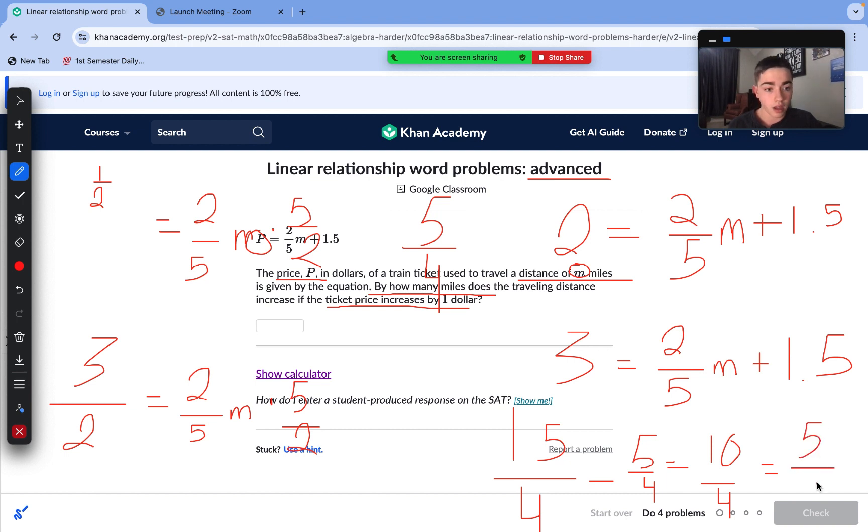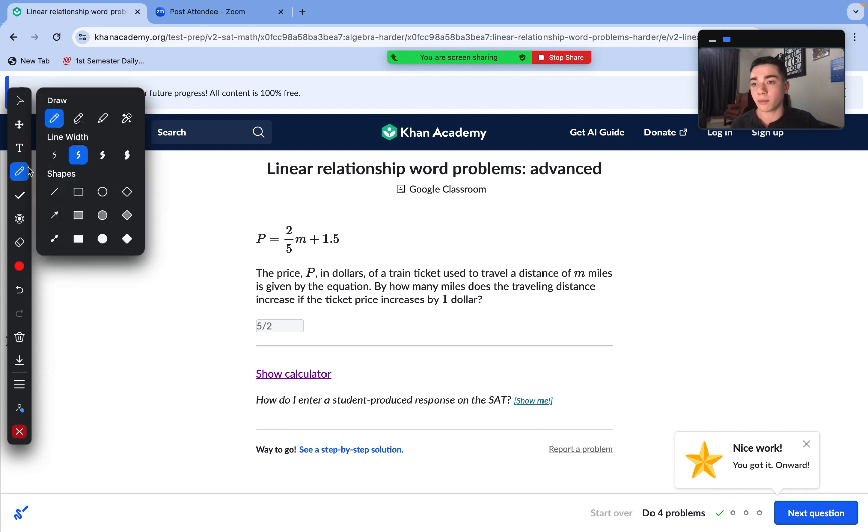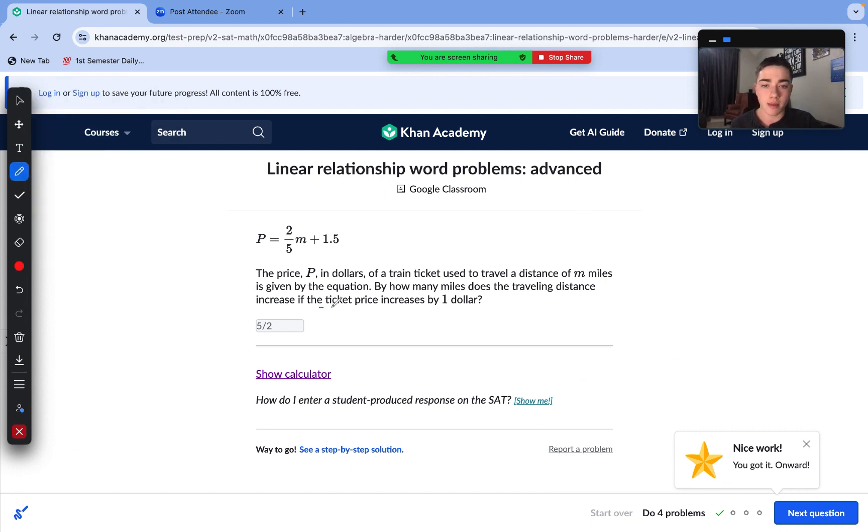So five over two is the mile increase when the ticket price increases by one dollar. So five halves is our answer. So we had to kind of reverse engineer this question. Make sure to not make the mistake of thinking ticket price increasing by one dollar is the slope, because then you're going to get 0.4 and you're going to be incorrect. We need to test these different values in order to find the correct answer for this question.